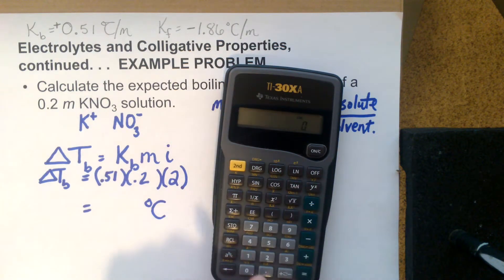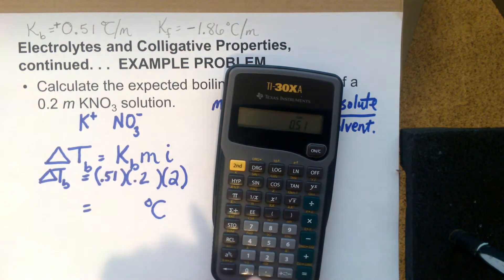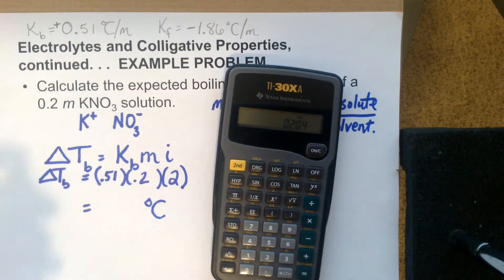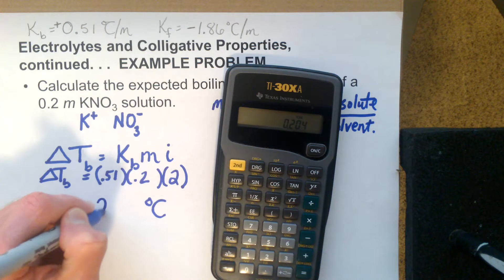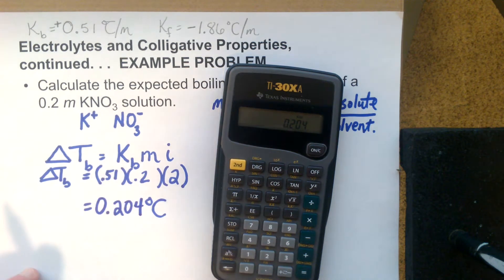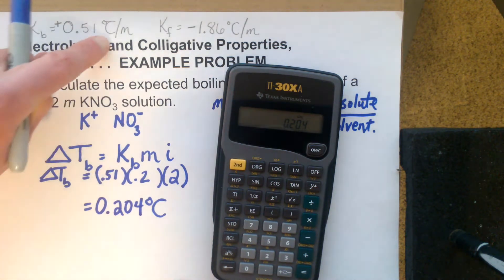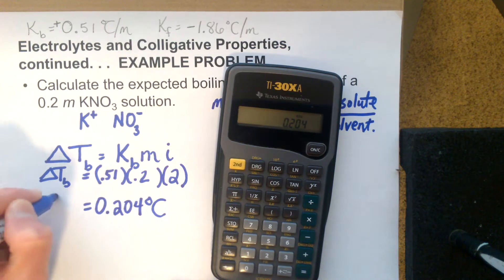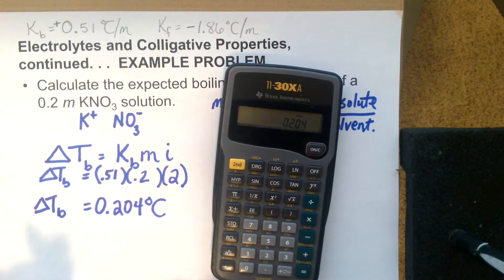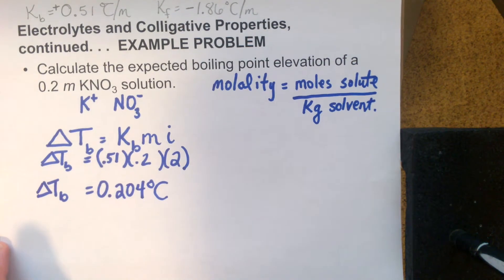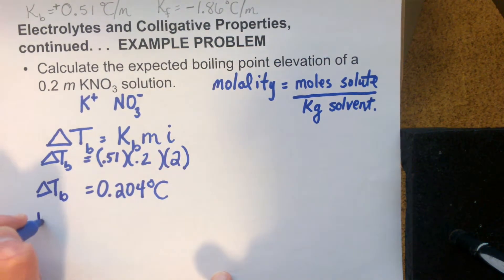Let's go 0.51 times 2 times 0.2. I went 0.51 times 0.2, that's the molality, times 2 for the Van't Hoff factor. I get a value of 0.204 degrees Celsius. The degrees Celsius comes from this Kb value here. This is the change in boiling point, the boiling point elevation.